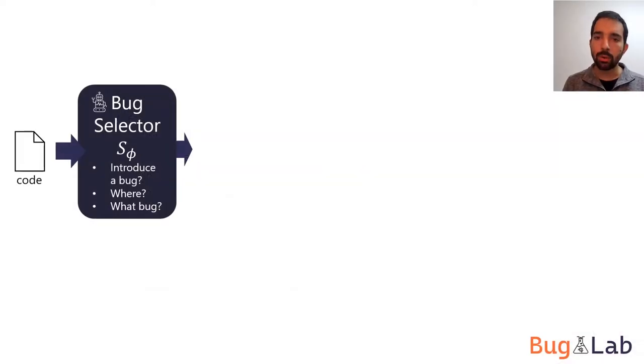BugLab is composed of two competing submodels, a bug selector and a bug detector. During training, the bug selector accepts a code snippet from our unlabeled training set, assumed to be correct.